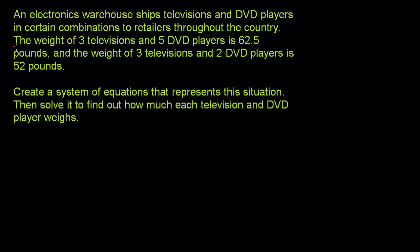The first one is that the weight of 3 televisions and 5 DVD players is 62.5 pounds. Then they told us that the weight of 3 televisions and 2 DVD players is 52 pounds. So we can translate these directly into equations. If we let T be the weight of a television and D be the weight of a DVD player,